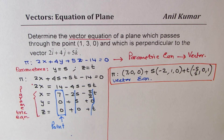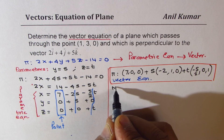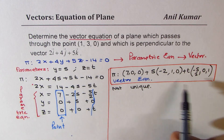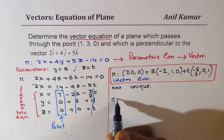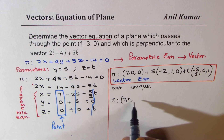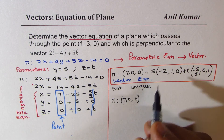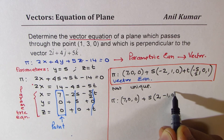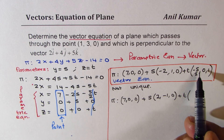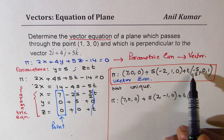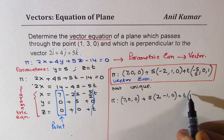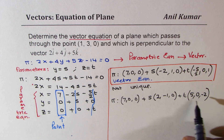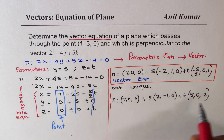Vector equations are not unique — you can get many equivalent forms. For example, rearranging and avoiding fractions: take the point (7, 0, 0), multiply the s-direction by minus 1 to get (2, -1, 0), and multiply the t-direction by minus 2 to get (5, 0, -2). That gives another valid vector equation for the same plane.